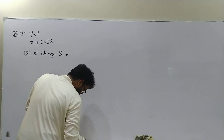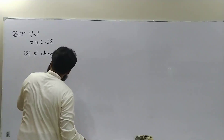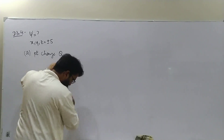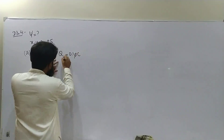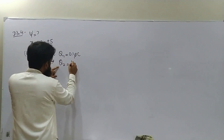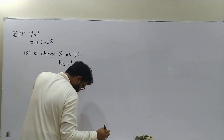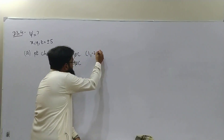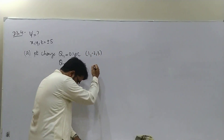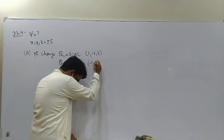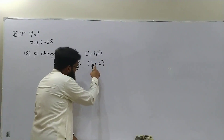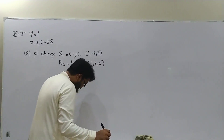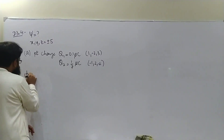There are two point charges: q1 = 0.1 microcoulombs and q2 = 1/7 microcoulombs. Their locations are given as (1, -2, 3) and (-1, 2, -2) respectively.